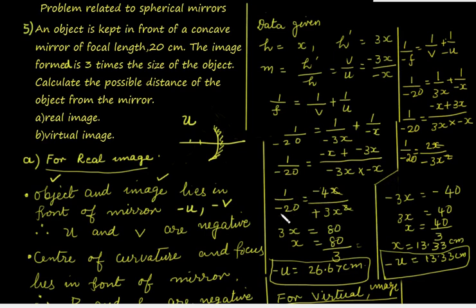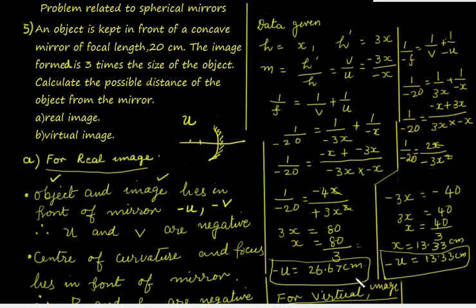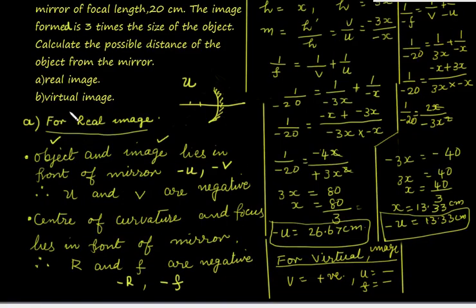On simplification, the numerator becomes negative x plus negative 3x, which is negative 4x, and the denominator is negative 3x squared. This gives 1 over negative 20 equals negative 4x over negative 3x squared, simplifying to 1 over negative 20 equals 4 over 3x. On cross multiplication, 3x equals 80, so x equals 80 by 3, which is 26.67 centimeters. Since x equals negative u, the object is at a distance of 26.67 centimeters in front of the mirror.